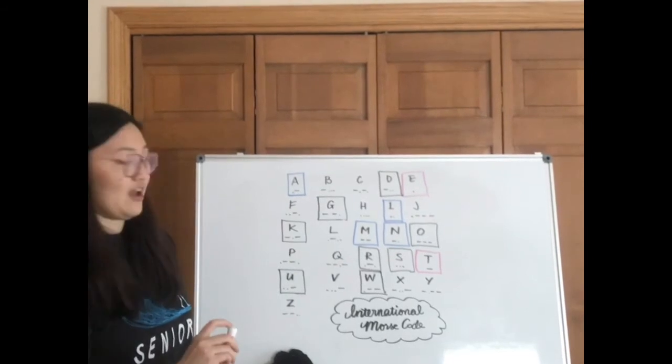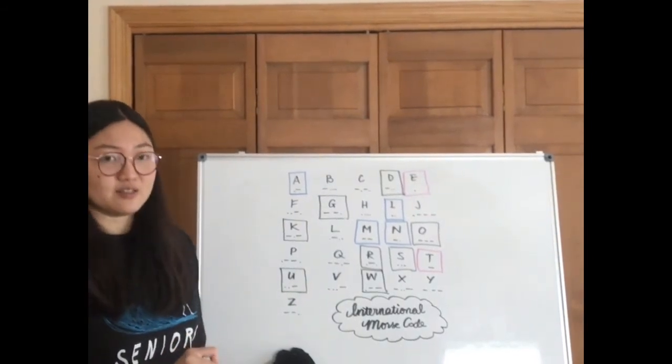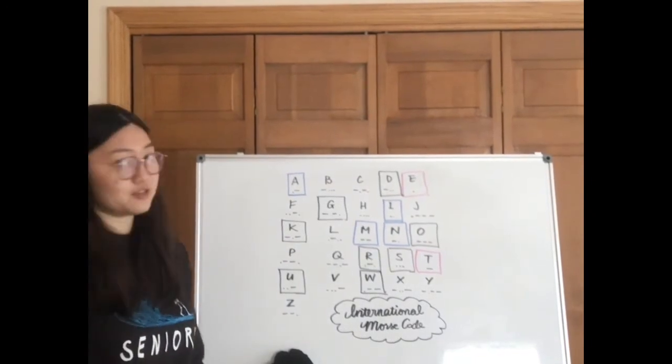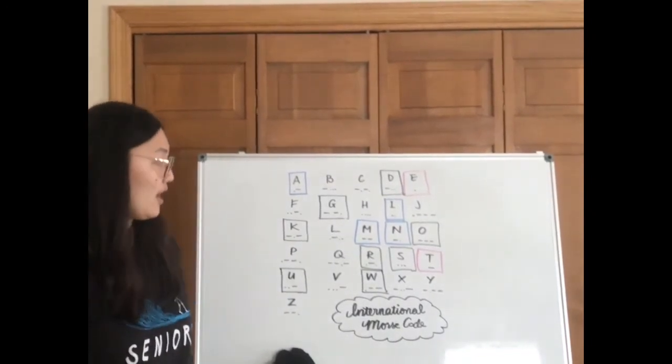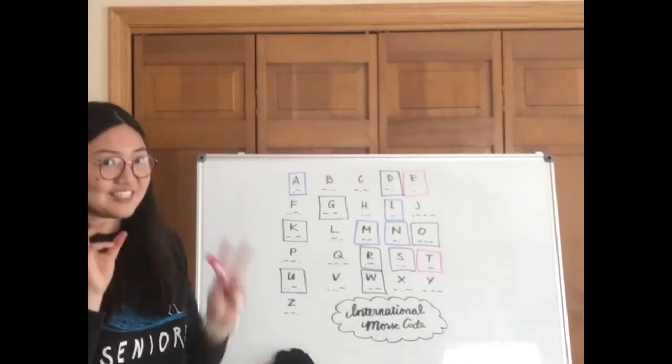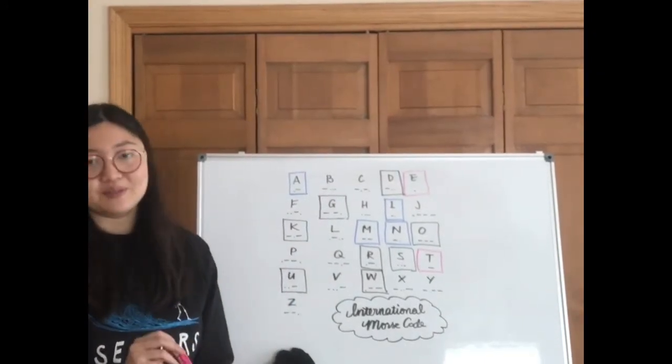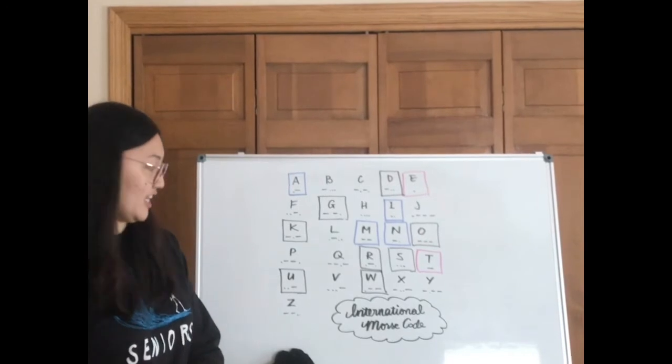In the twosies, you have two positions to be held in place. In both cases, you can put either a dot or a dash. So two times two will give you four. And then similarly in the threesies, you do two times two times two. You have three positions. Each of them have two possibilities. That gives you eight.